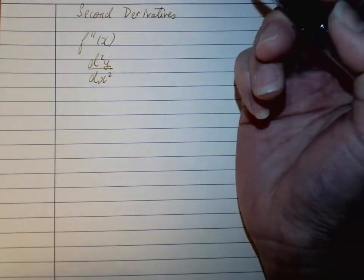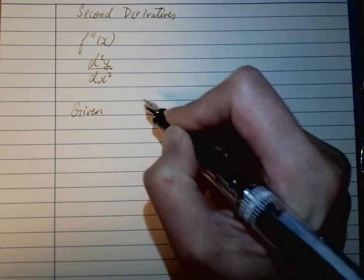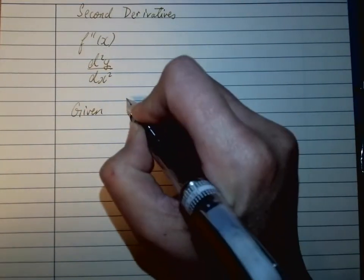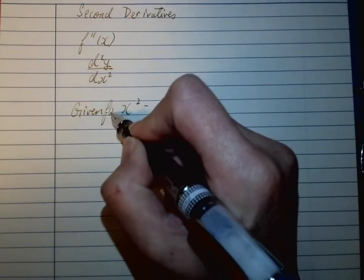For example, given f(x) = x² - 5/x², we want to find f''(x).